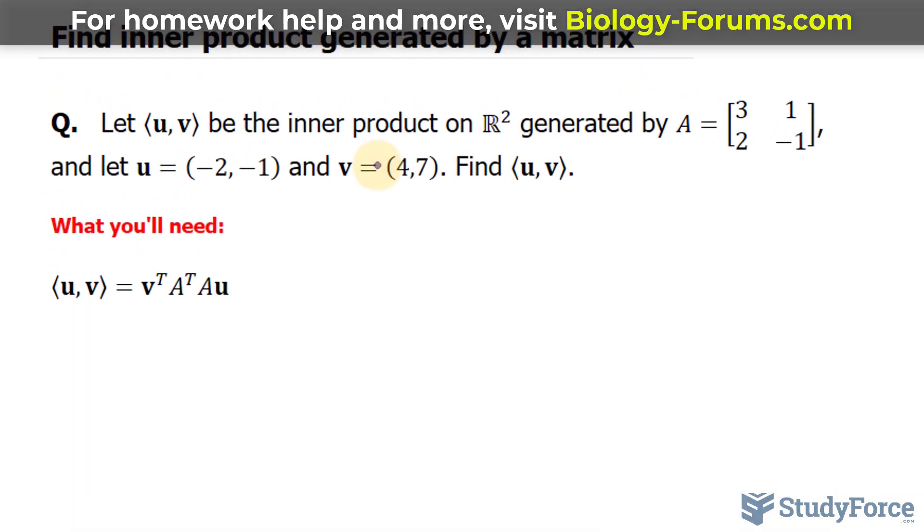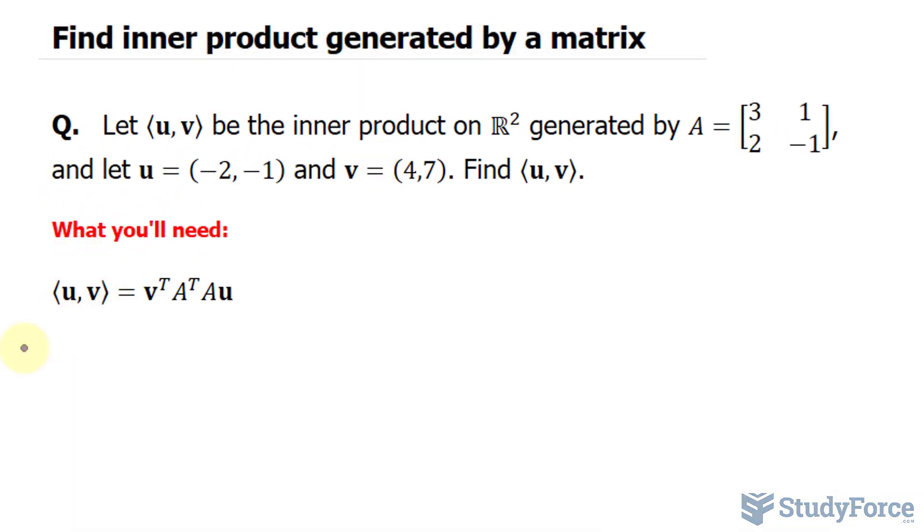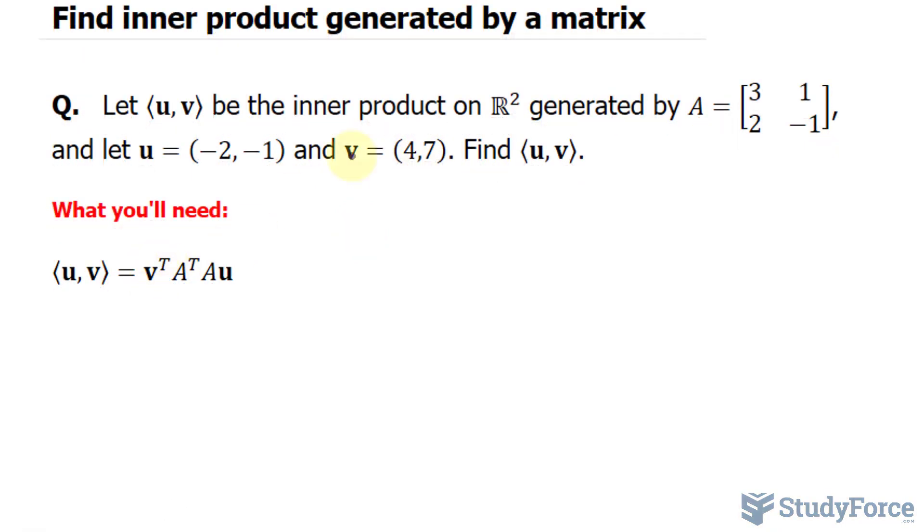To do this, we use the following formula, where the inner product of u and v is equal to the transpose of the vector v. That's easy to do—transposing means that the rows become the columns. Let's begin by transposing vector v.